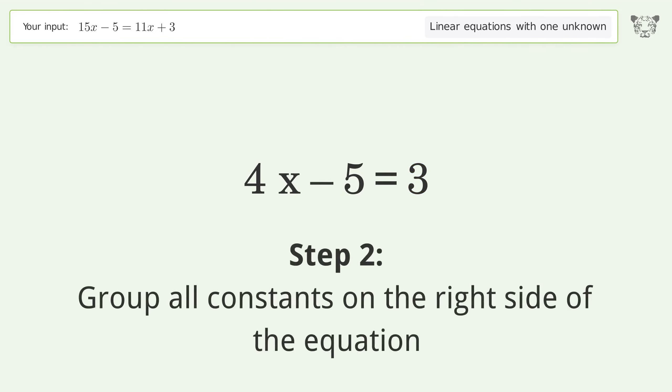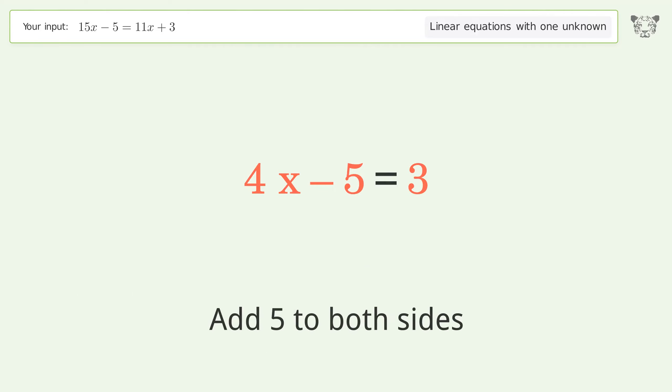Group all constants on the right side of the equation. Add 5 to both sides. Simplify the arithmetic.